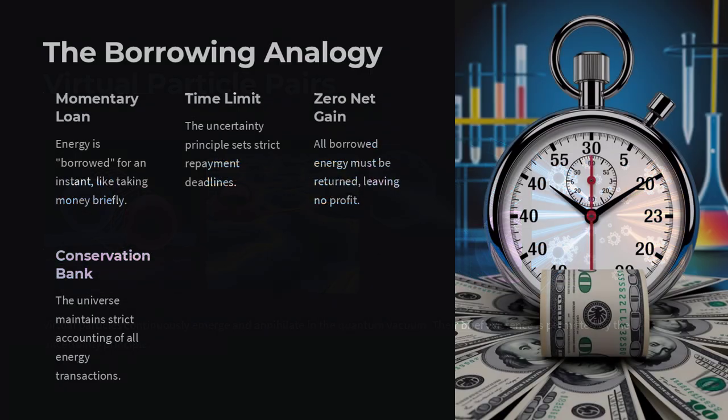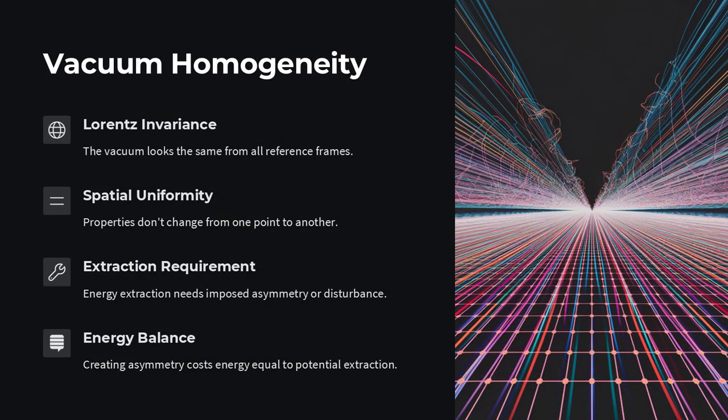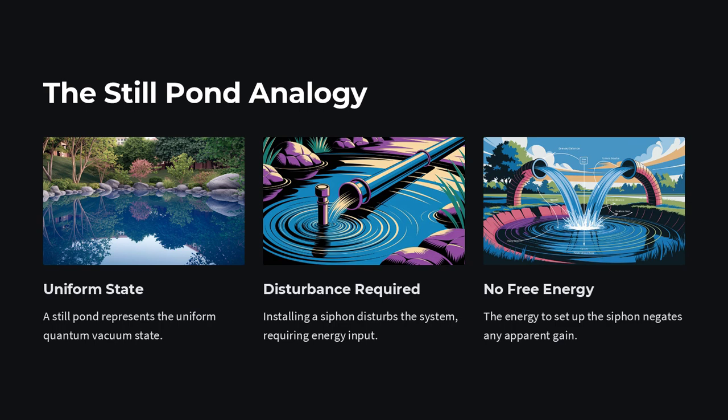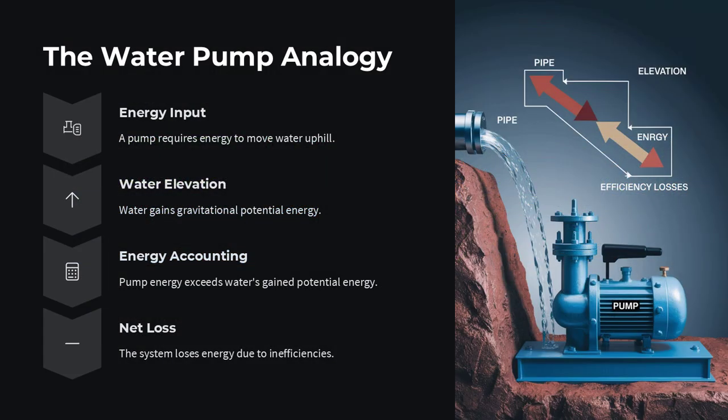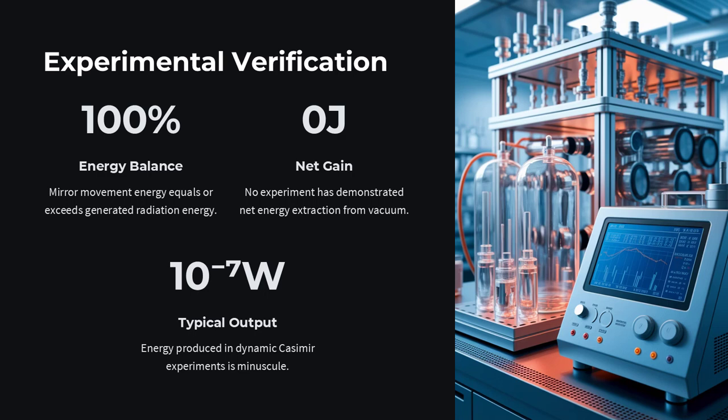At the most fundamental level, the quantum vacuum is not a bland, featureless void, but a dynamic interplay of virtual particles that momentarily pop into existence. Their ephemeral nature, as dictated by the uncertainty principle, means that any energy borrowed to facilitate these fluctuations is rigorously time-limited. In attempts like the dynamic Casimir effect, where moving boundaries generate real photons from vacuum fluctuations, the energy observed in the produced radiation can be completely accounted for by the external work done on the system. The energy doesn't emerge from the vacuum as a free lunch.